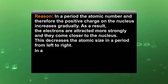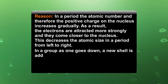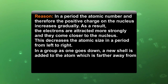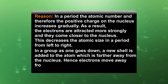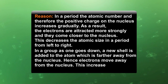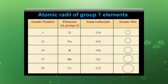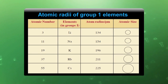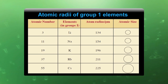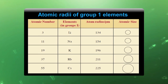In a group, as one goes down, a new shell is added to the atom which is further away from the nucleus. Hence, electrons move away from the nucleus. This increases the atomic size in a group from top to bottom. This table shows the regular increase of atomic size of elements in group 1, from lithium to cesium. As we move from lithium to cesium, atomic size increases because there is a regular increase in the number of shells.